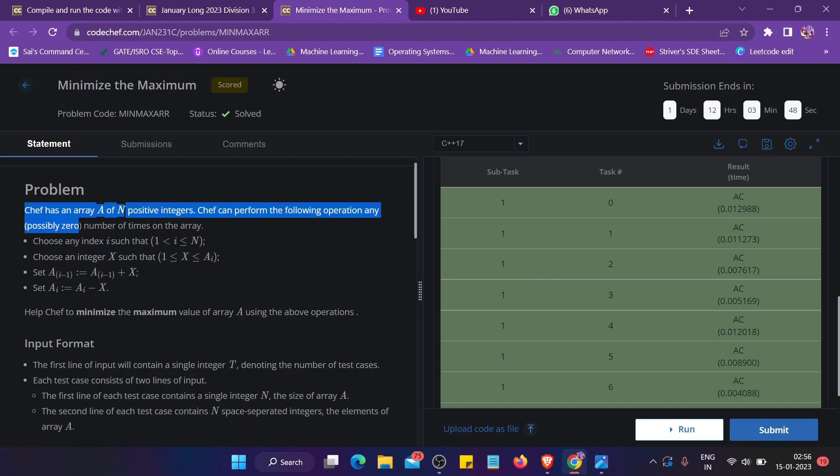Chef has an array A of n positive integers. Chef can perform the following operation any number of times on the array: choose any index i such that i is between 1 to n, choose an index x such that x is between 1 and A[i], and set A[i-1] to previous element plus x, and A[i] to A[i] minus x.